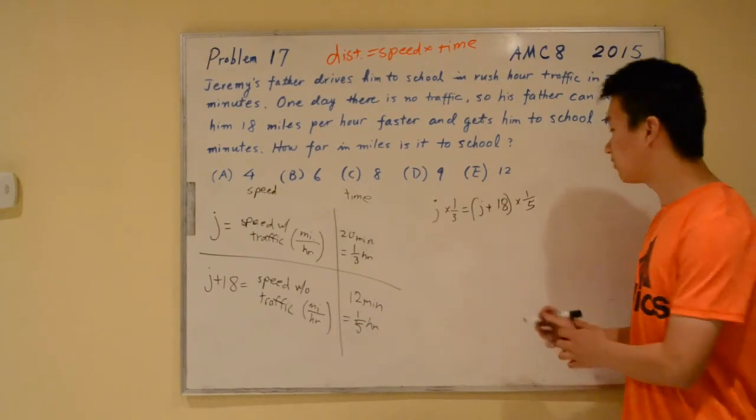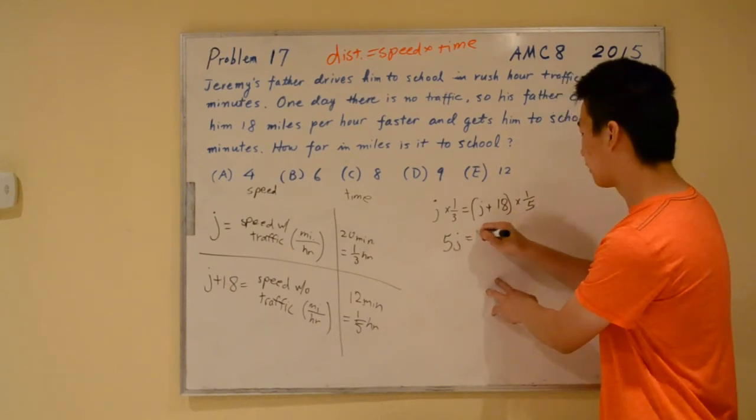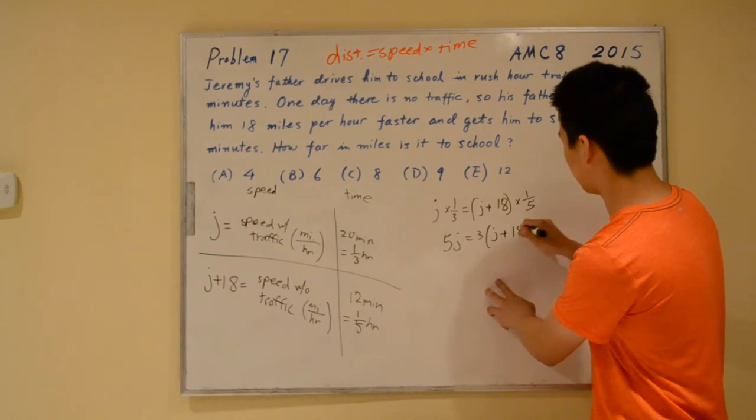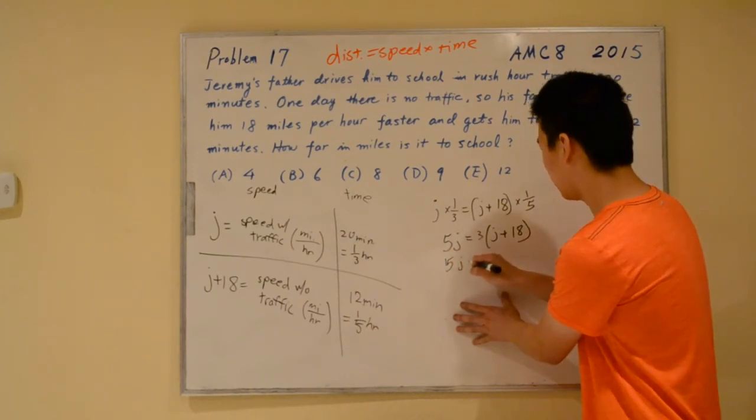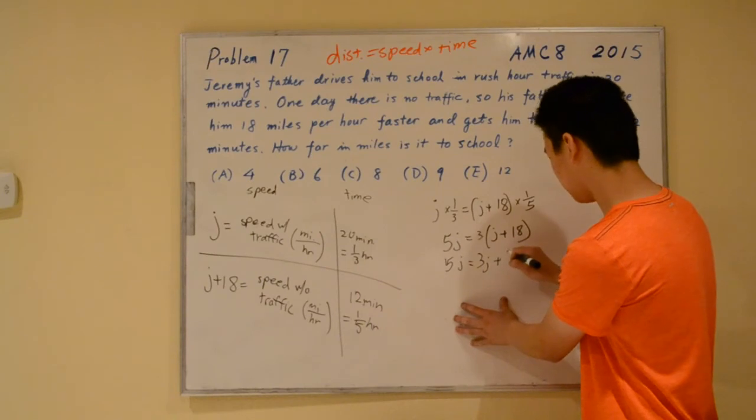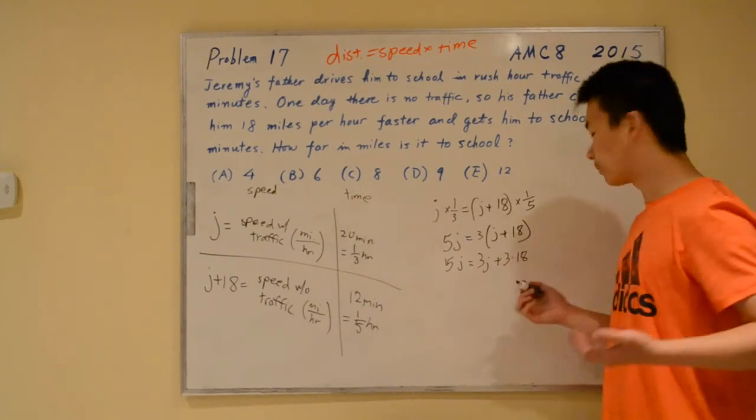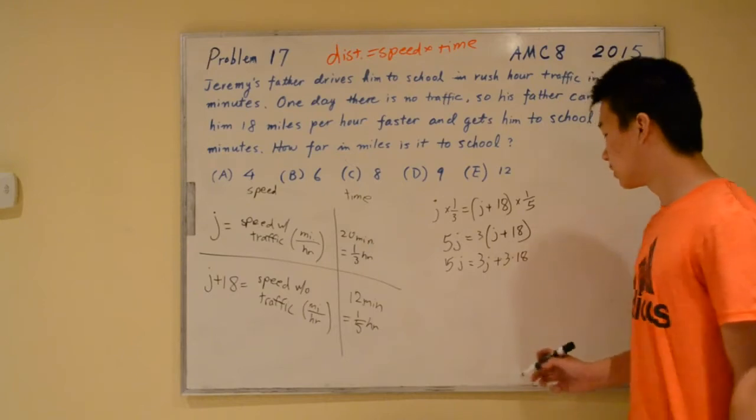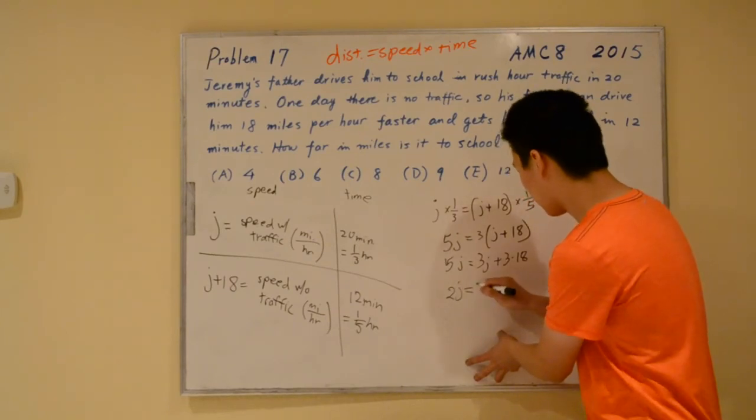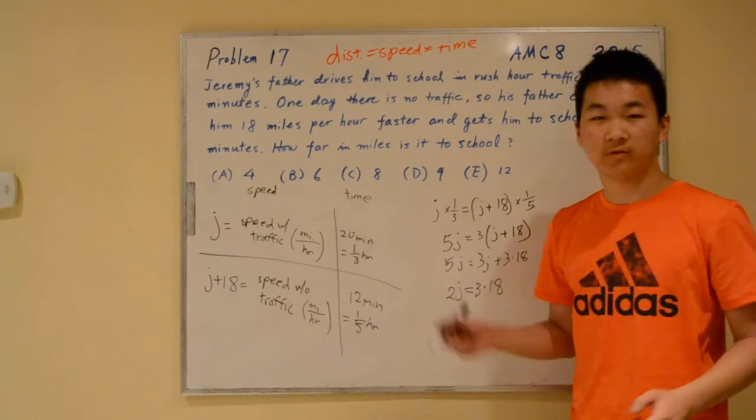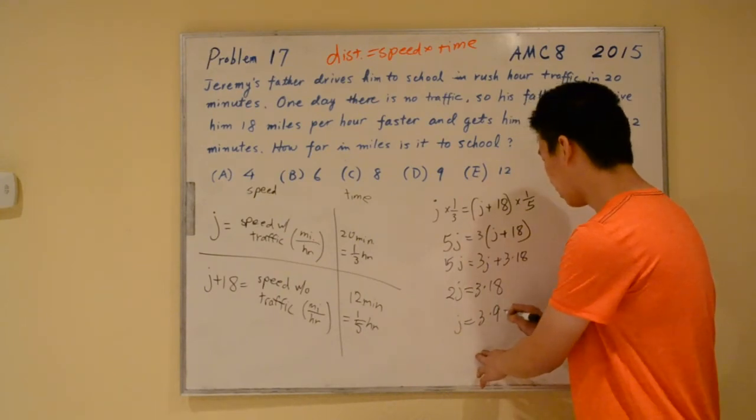Our equation is j times 1 third equals j plus 18 times 1 fifth. If we multiply both sides by 15 to get rid of the fractions, we get 5j equals 3 times j plus 18. Distributing, we get 5j equals 3j plus 3 times 18. We leave this unsimplified because we probably will have terms that we can cancel out later. Subtracting 3j from both sides, we get 2j equals 3 times 18. Dividing both sides by 2, we end up with j equals 3 times 9 or 27.